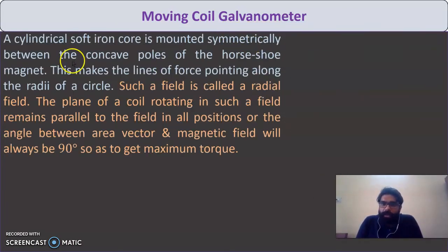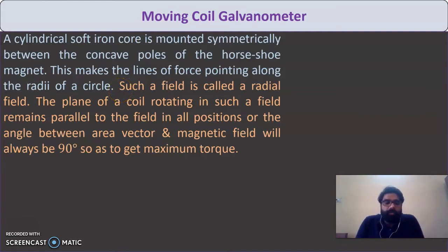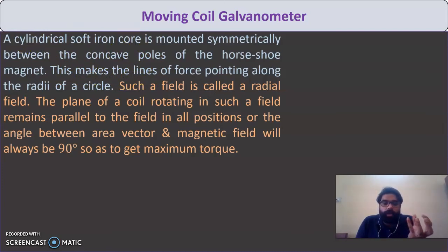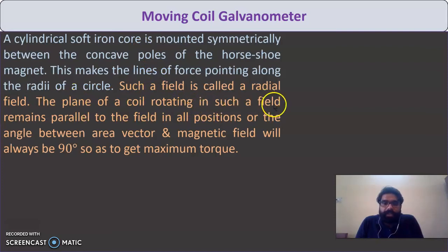A cylindrical soft iron core is mounted symmetrically between the concave poles of the horseshoe magnet. This makes the lines of force point along the radii of a circle. The soft iron has high permeability, so it attracts the magnetic field lines and keeps them uniform. The aluminum frame with copper wire is wrapped over this cylindrical soft iron core.